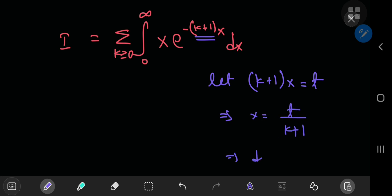Which implies that dx equals dt by k plus 1. So now our integral transforms into the infinite sum over k of the integral from 0 to infinity. The limits of integration aren't going to change at all. And x becomes t by k plus 1.